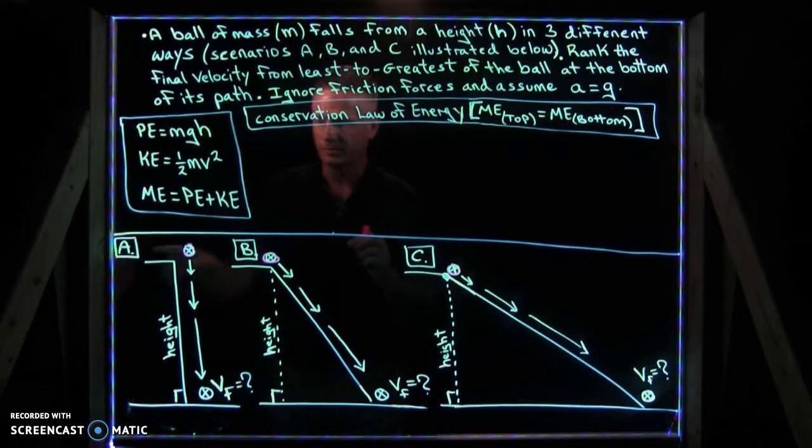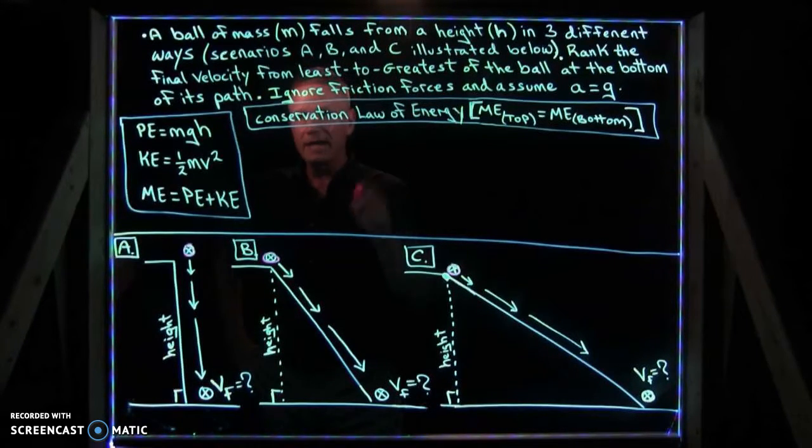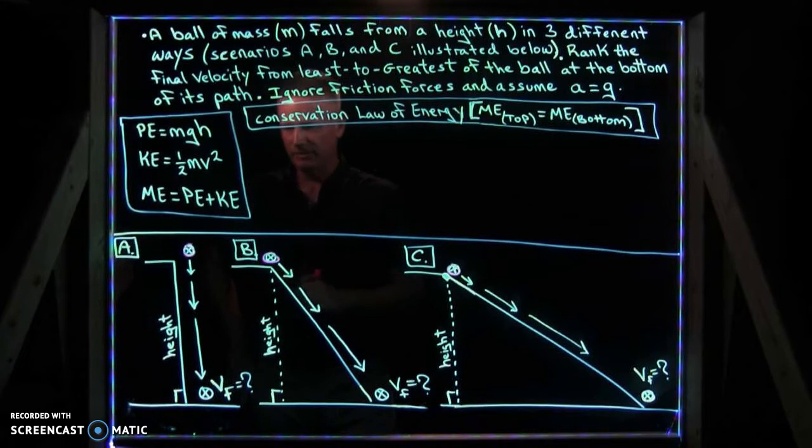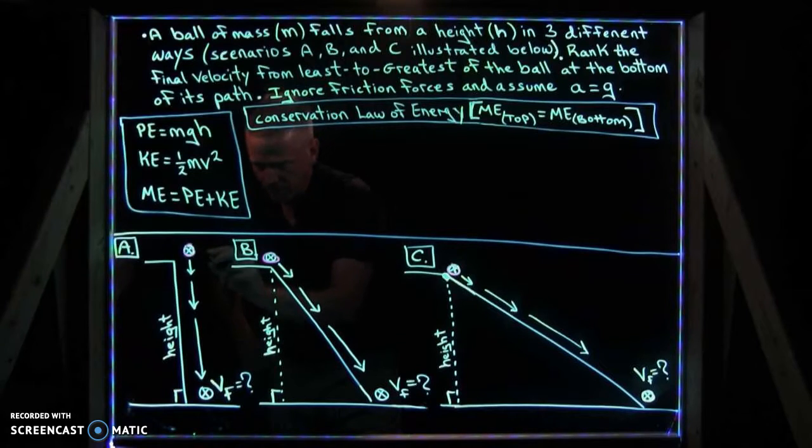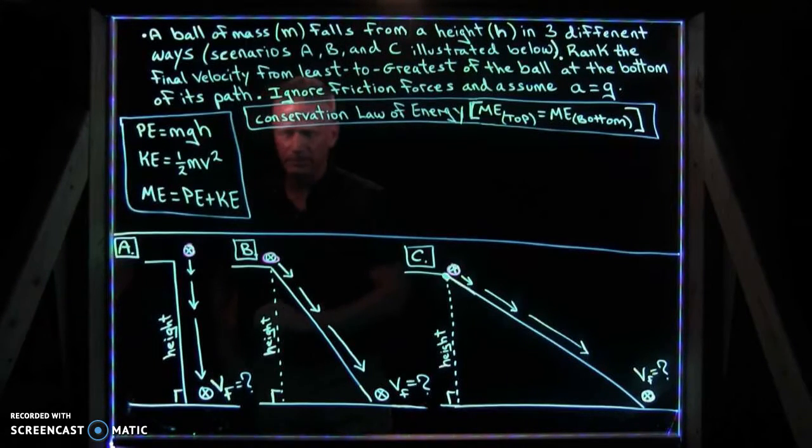Scenarios A, B, and C illustrated below. Rate the final velocity from least to greatest of the ball at the bottom of its path. In other words, if the ball just falls vertically off this height all the way down to the ground, how fast is it going right at the bottom?